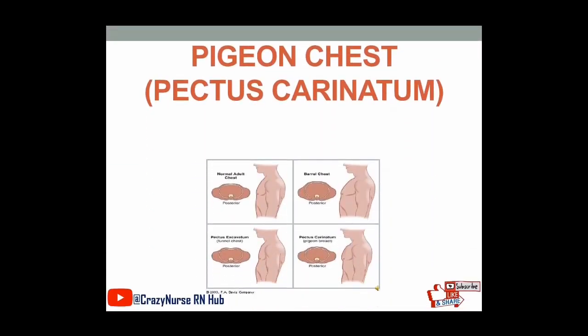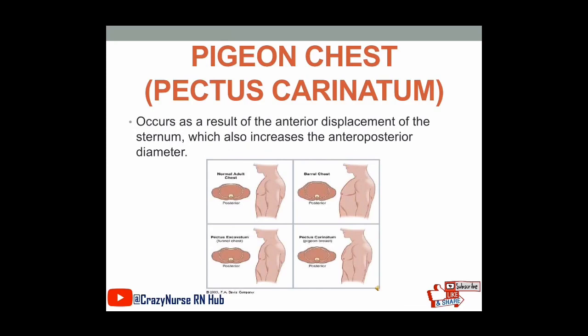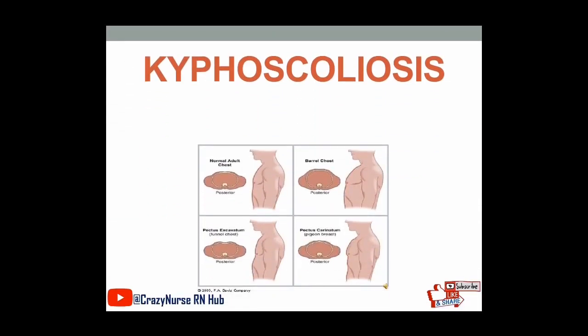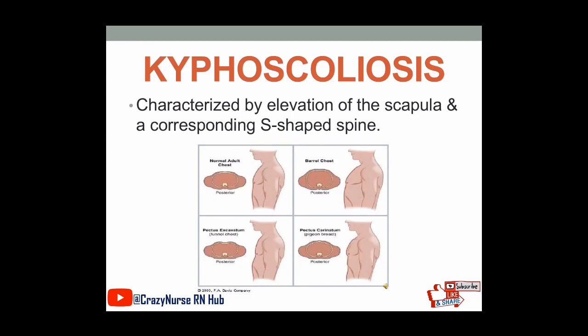Pigeon chest or pectus carinatum occurs as a result of the anterior displacement of the sternum, which also increases the antero-posterior diameter. Kyphoscoliosis is characterized by elevation of the scapula and a corresponding S-shape of the spine.